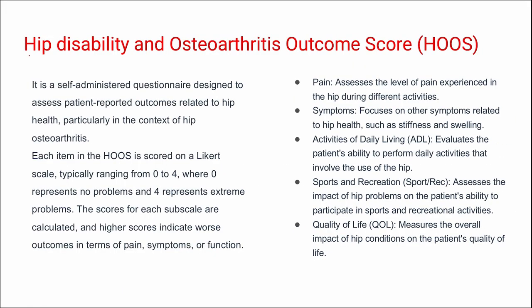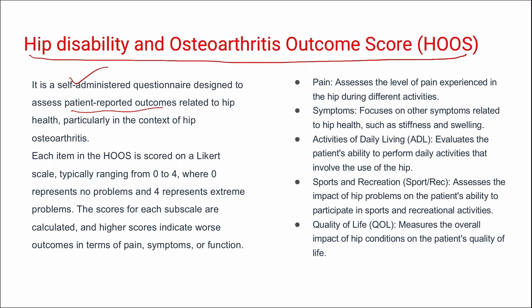Next is HOOS — Hip Disability and Osteoarthritis Outcome Score — a self-administered patient-reported outcome measure for hip health. Similar to the previous outcome scores, it uses a Likert scale ranging from 0 to 4. Higher scores indicate worse outcomes. The domains are pain, symptoms, activities of daily life, sports and recreation, and quality of life.